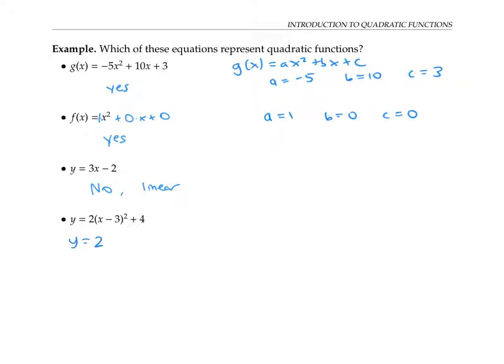We get y equals two times x minus three times x minus three plus four. So that's two times x squared minus three x minus three x plus nine plus four. Continuing, I get two x squared minus 12 x plus 18 plus four.